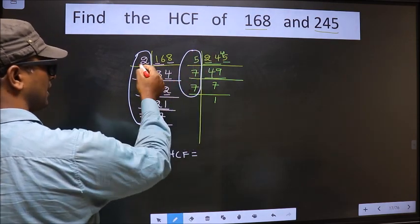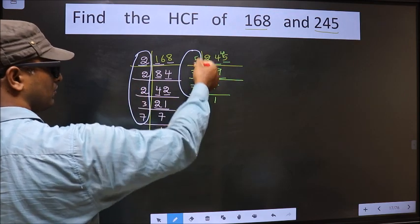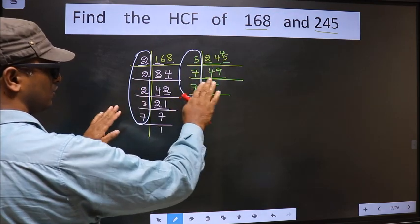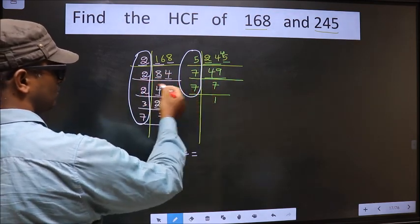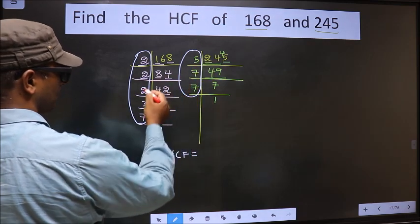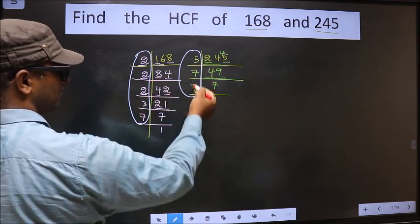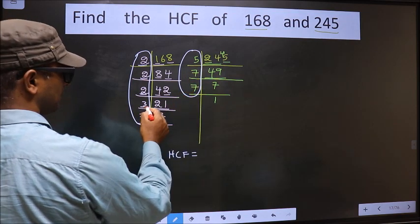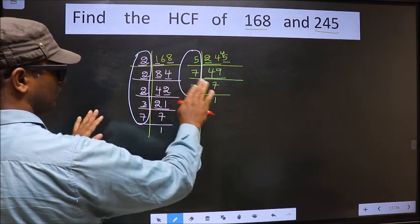Starting with the number 2, do we have 2 here? No. Next number 2, do we have 2 here? No. Next number 3, do we have 3 here? No.